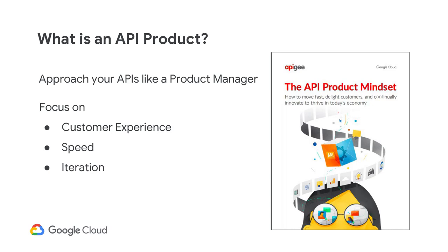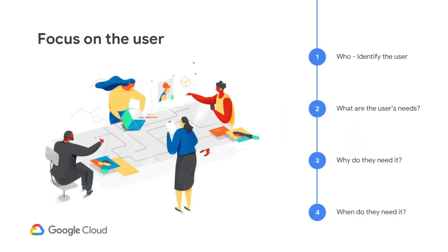Let's dig into how this is done. To understand the need for an API product, you must first understand the user. Let's start with asking four key questions centered around the user of your API: Who is the user? What are the user's needs? Why do they need it? When do they need it? The answer to the first question is simple: the user of your API is an application developer who will create applications using your API. The application developer is also known as the API consumer.